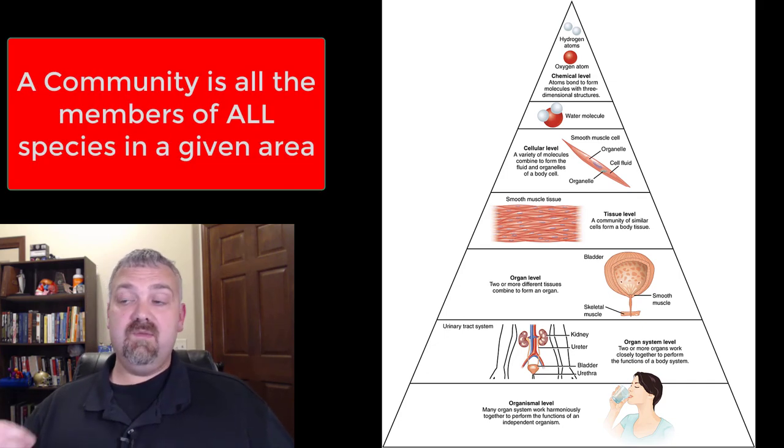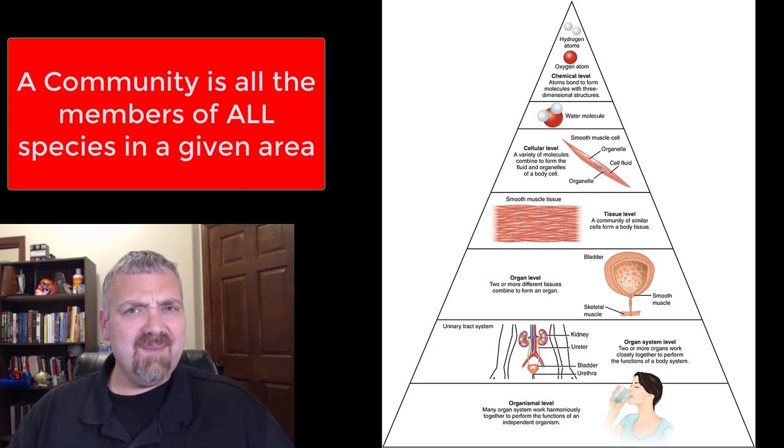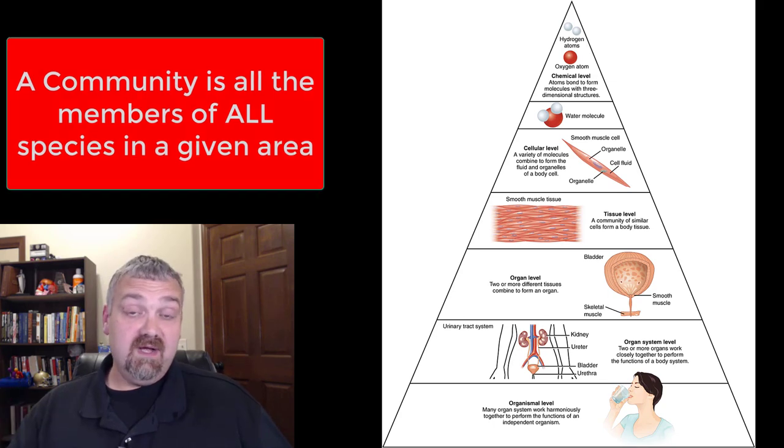And then we have communities. So communities are all the different types of species that live in a given area. And the reason I wanted to talk about this for an anatomy class is because it ties into our microbiology as well.